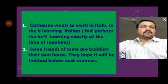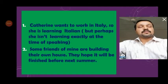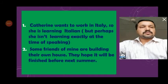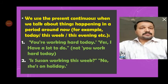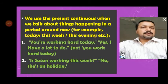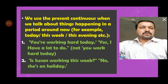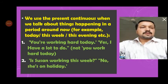Use 3 — we use present continuous when talking about things happening in a period around now: today, this week, this evening, etc. For example: 'You are working here today, yes, I have a lot to do' — about the present condition today. 'Is Susan working this week?' — Susan may be absent today, but the question is whether she is doing her work this week.